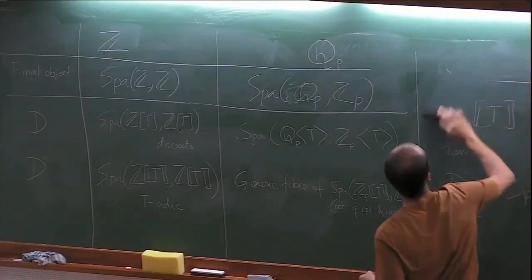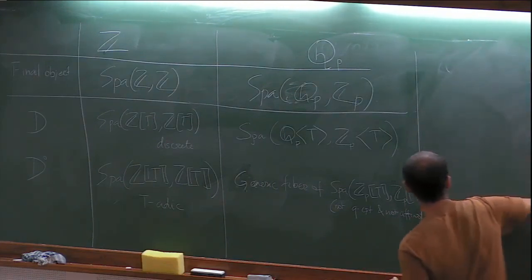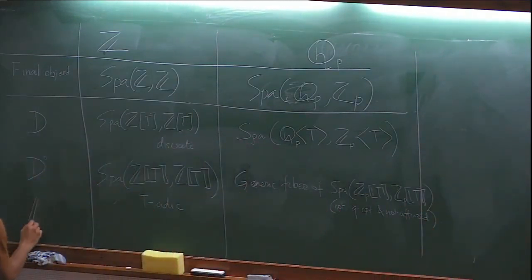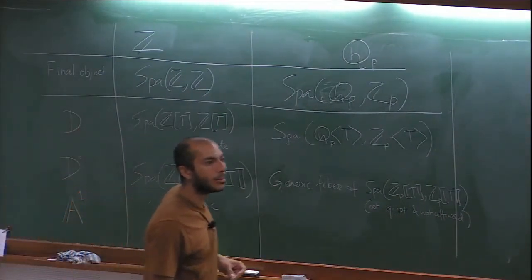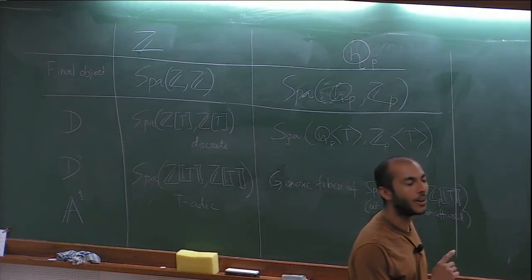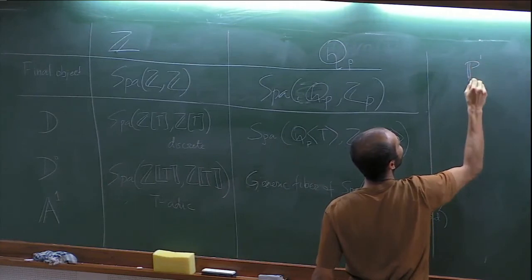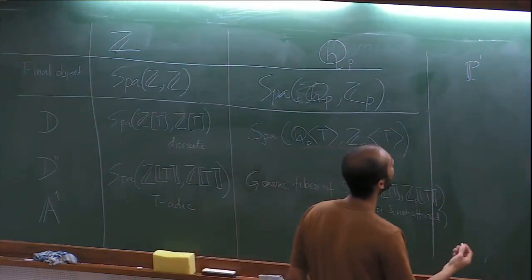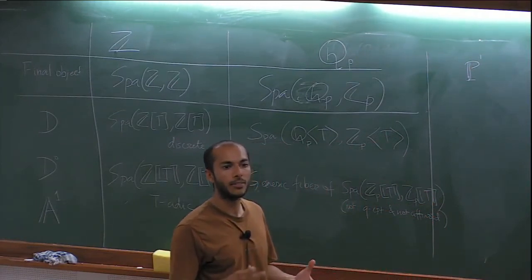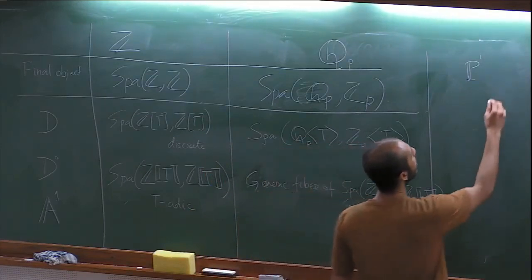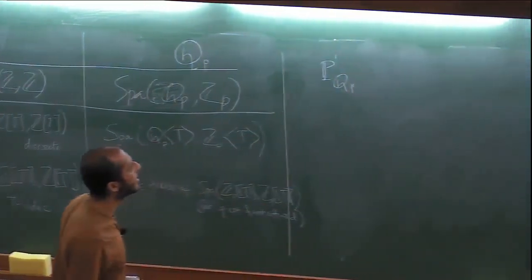Now we give the two most important examples in algebraic geometry: the affine line and the projective line. Let's describe the projective line P¹ over Q_p. Over ℤ it's easy: take two copies of A¹ and identify over the open rational subset where T is non-zero. Over Q_p, we do something closer to topology: take two closed unit disks and identify along the unit circle.